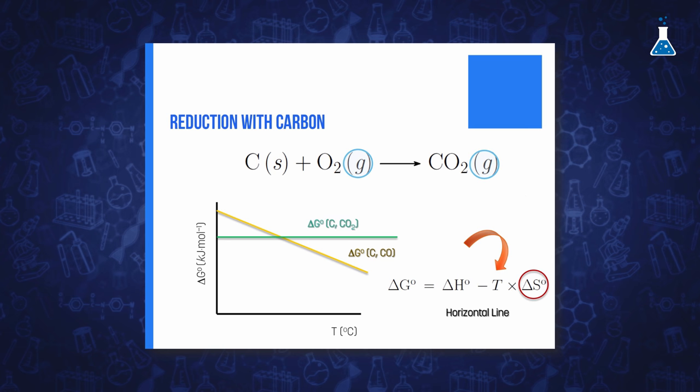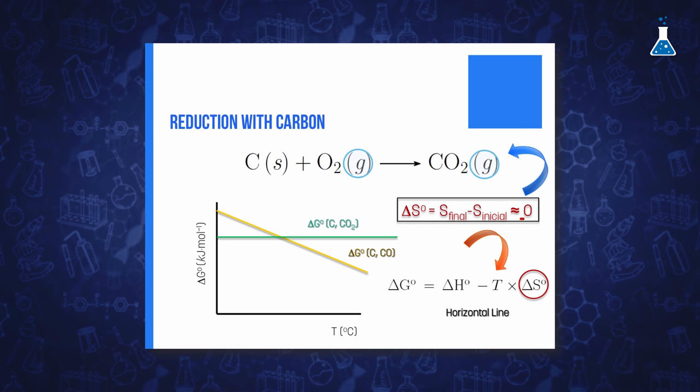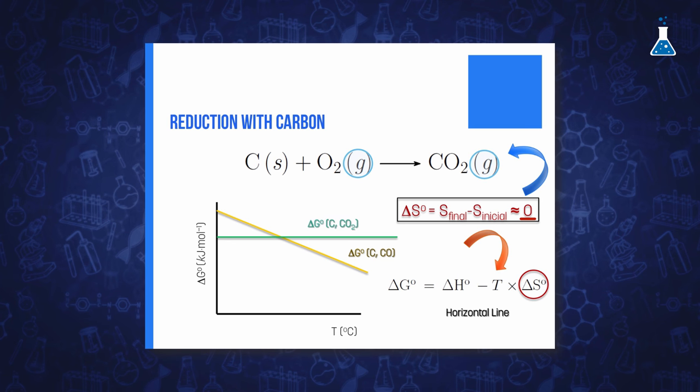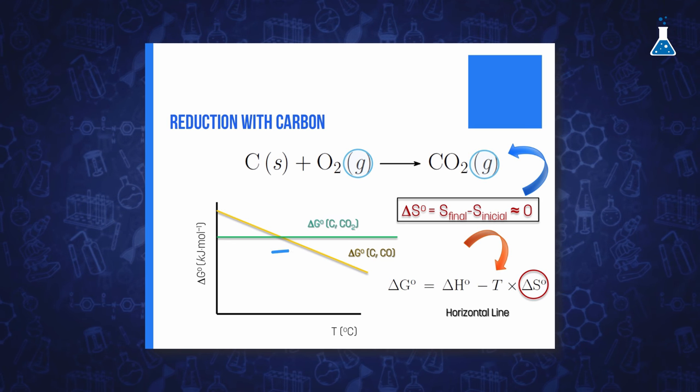The standard reaction entropy for the oxidation of carbon to carbon dioxide is close to zero as there is no net change in the amount of gas, so we have a horizontal line. For the oxidation of carbon monoxide to carbon dioxide we have a negative change in the standard reaction entropy due to the number of gas moles being reduced from three in the reactants to two moles in the product.